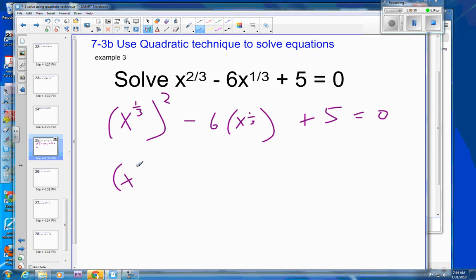So that makes this x to the one-third, and it's going to be minus 5, and then x to the one-third minus 1.